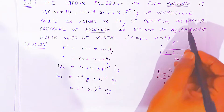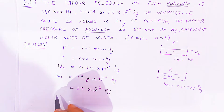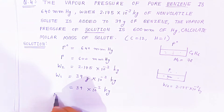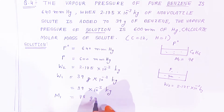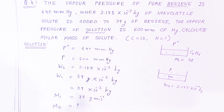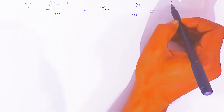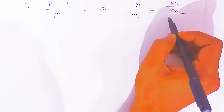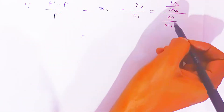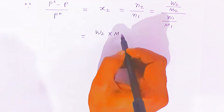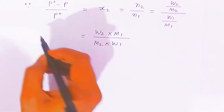We are asked to calculate the molar mass of solute, M₂. M₁ (molar mass of solvent benzene) is 78 g/mol. We recall the formula for relative lowering of vapor pressure: (P₀ − P) / P₀ = mole fraction of solute = (W₂/M₂) / (W₁/M₁). Rearranging, this gives: (P₀ − P) / P₀ = (W₂ × M₁) / (M₂ × W₁).